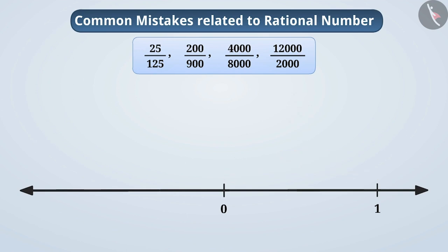The correct understanding is that we can represent any rational number on the number line. But for this, it is necessary that we express the given rational number in its standard form. For example, if we want to represent 25 by 125 on the number line, we can express it in the standard form 1 by 5. Here, the value of 25 by 125 is equal to the value of 1 by 5. So on the number line, they will be represented in one place. The location of 1 by 5 can be denoted by dividing the unit distance between 0 and 1 into 5 equal parts.